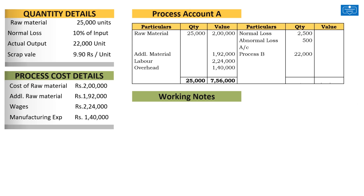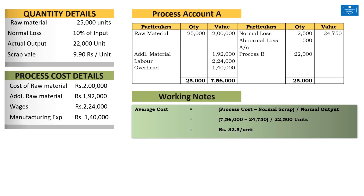Going on to the cost part, the average cost has to be calculated by subtracting the income we get from the sale of normal scrap. We have lost 2,500 units for normal scrap, which can be sold at Rs. 9.90 per unit, giving us revenue of Rs. 24,750. This has to be credited to the process account against normal loss. The average cost is: process cost minus normal scrap revenue, divided by normal output. Total cost is Rs. 7,56,000 minus Rs. 24,750, divided by 22,500 units, giving an average cost per unit of Rs. 32.50.